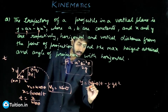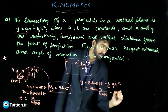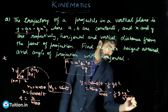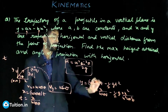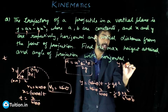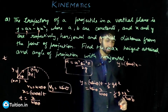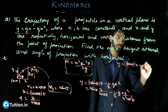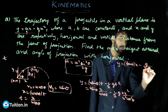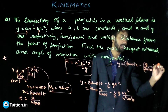Substituting t = x / (u cos θ), we get y = u sin θ · (x / u cos θ) − ½g · (x² / u² cos²θ). Simplifying, u cancels and we get y = tan θ · x − (g / 2u² cos²θ) · x².